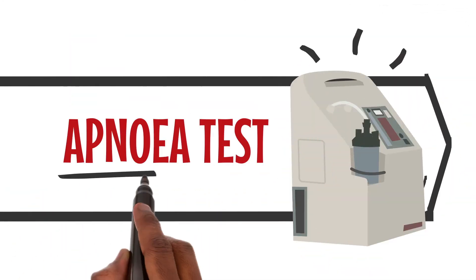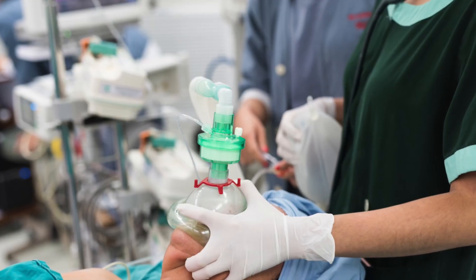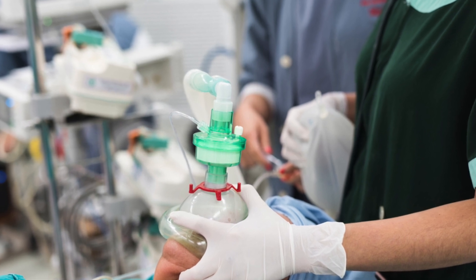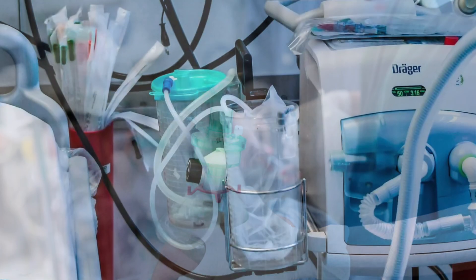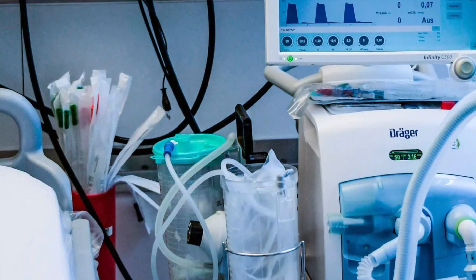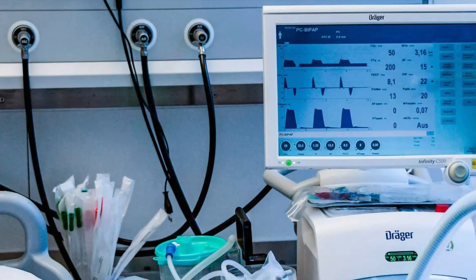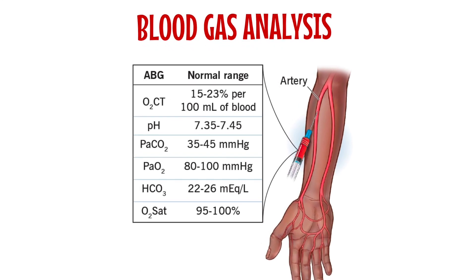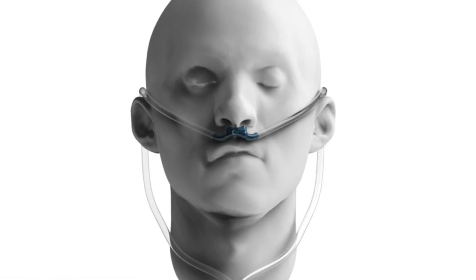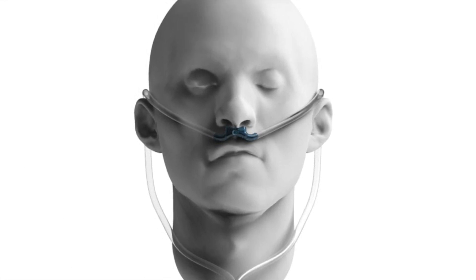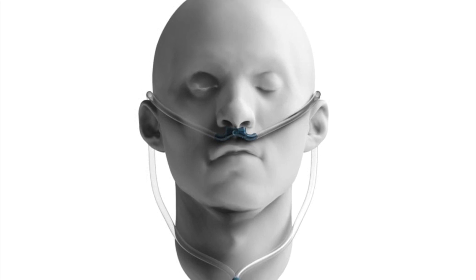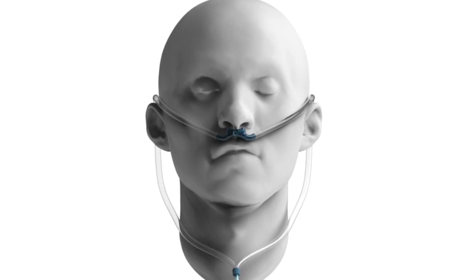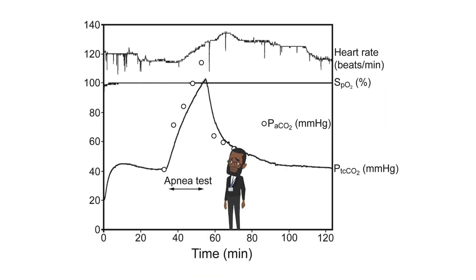Now we move on to the apnea test. Pre-oxygenate the patient at 100% oxygen for 10 minutes until you have a partial pressure of oxygen of more than 200 millimeters of mercury. Normalize the partial pressure of carbon dioxide to 30 to 45 millimeters of mercury on the ventilator. Get a baseline blood gas analysis after 10 to 20 minutes. Then disconnect the ventilator and pass oxygen at 6 liters per minute through nasal cannula in the end of an endotracheal tube or T-piece, if that's what the patient is using. Then observe for respiratory effort.